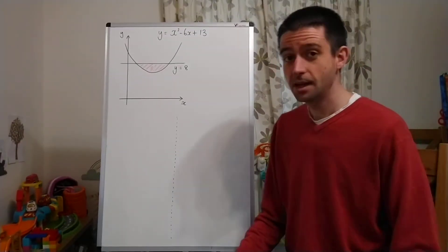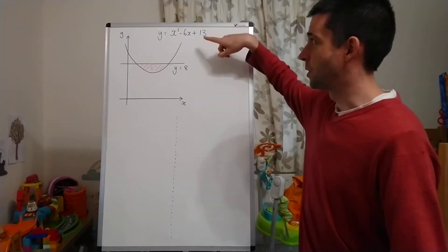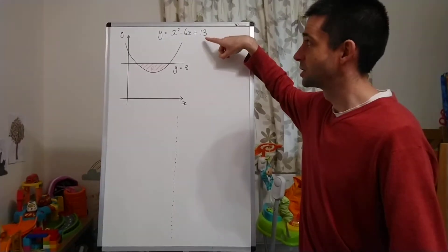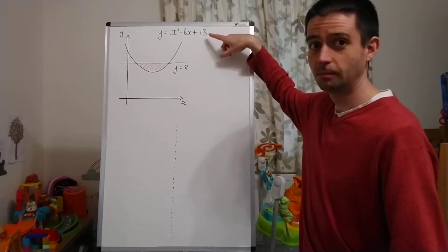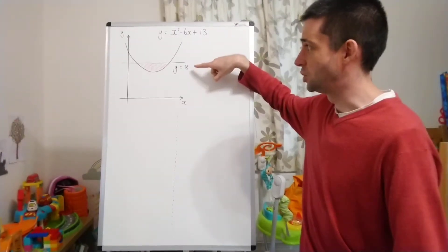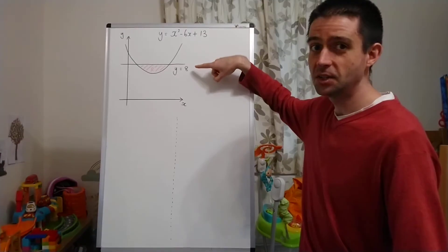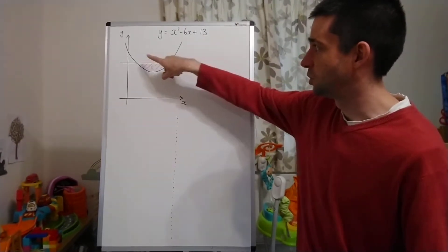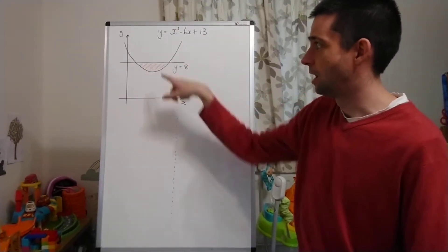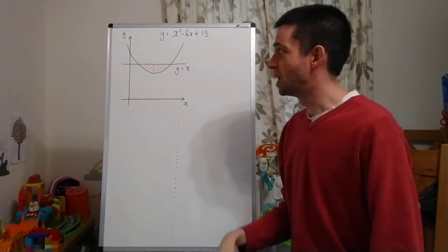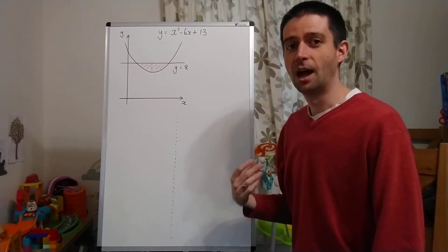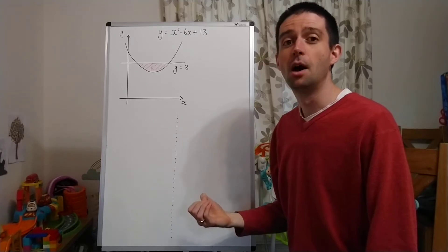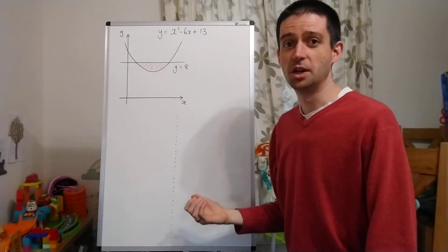What we have here is a curve with equation y equals x squared minus 6x plus 13 and a line with equation y equals 8. The region contained between the curve and the line I've shaded in red and labelled R, and what we're going to do is find the exact area of that region R.